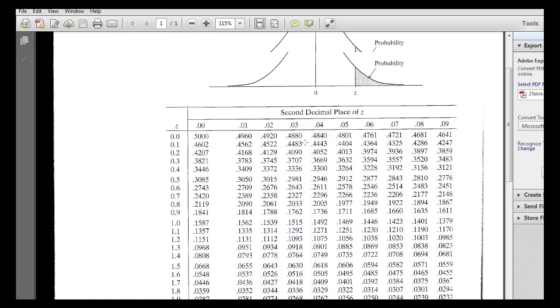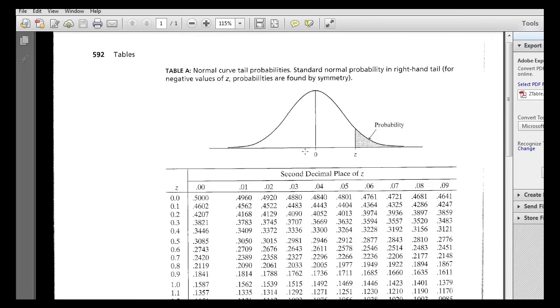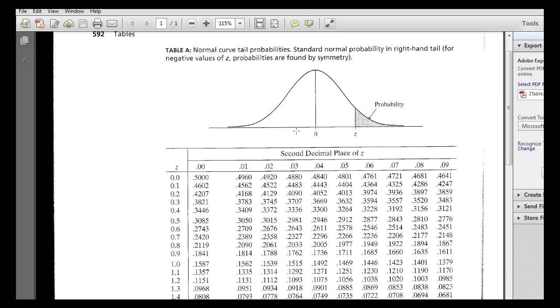One other thing to note is that this is symmetrical. So when I find the p-value that's to the right of 1.23, I can say that at z minus 1.23, which might be right about here, the p-value here is the same probability, or the same proportion, 0.1093.